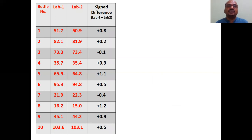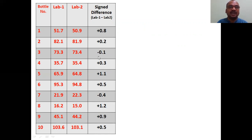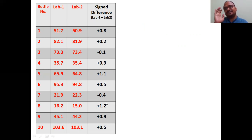Now we will calculate the sign and the difference. You take the difference of lab one values minus lab two values. You keep the sign — that's why this is a sign and rank test. First we are giving a sign: positive or negative. Lab one data minus lab two data — like that we get the values. Here we got a negative because it is a smaller value minus a bigger value. Don't reverse it. So I got the sign and difference data.